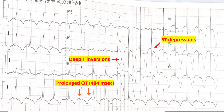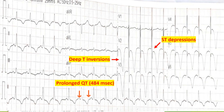An important point is the prolonged QT, which has been calculated to be around 484 ms — definitely a prolonged QT. Combining all these facts, what we can decipher based on the history is: do these T wave inversions link to some pathology with the nervous system?